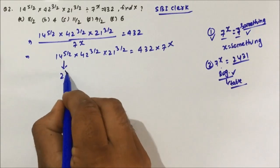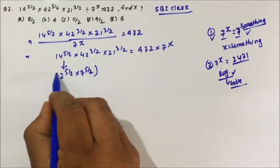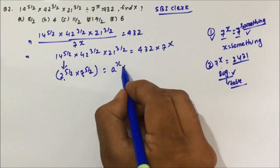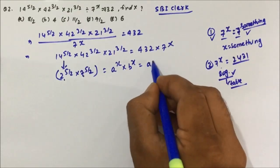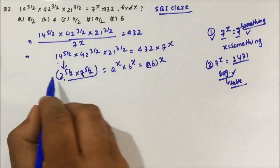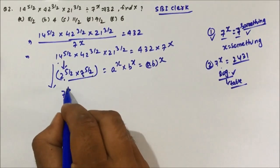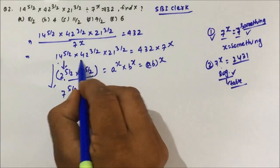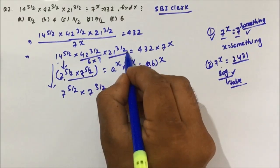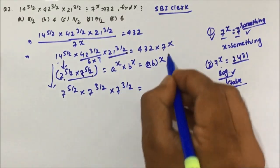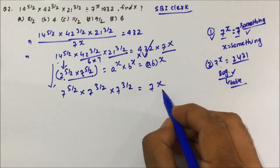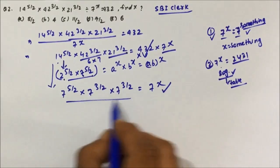Since 14 = 2 × 7, we have 14^(5/2) = 2^(5/2) × 7^(5/2). We take only the 7^(5/2) part. Since 42 = 6 × 7, we get 7^(3/2) from 42^(3/2). Since 21 = 3 × 7, we get 7^(3/2) from 21^(3/2). Using the rule a^x × b^x = (ab)^x, we extract only the powers of 7, ignoring the non-7 factors, as the remaining data is also in terms of 7^x.